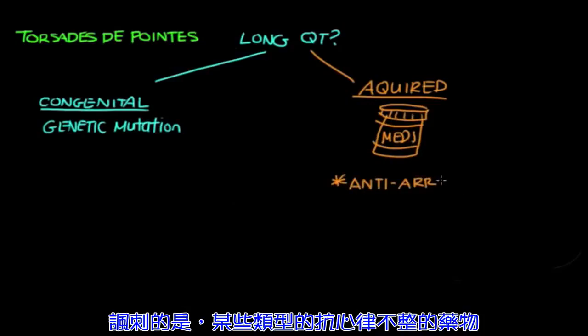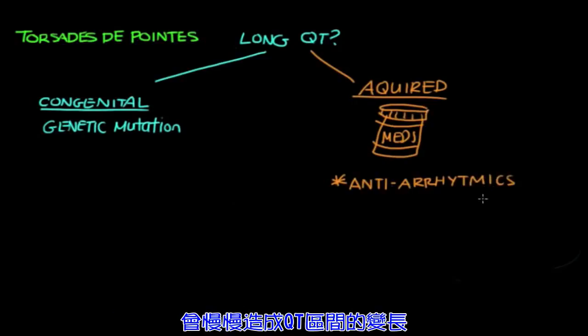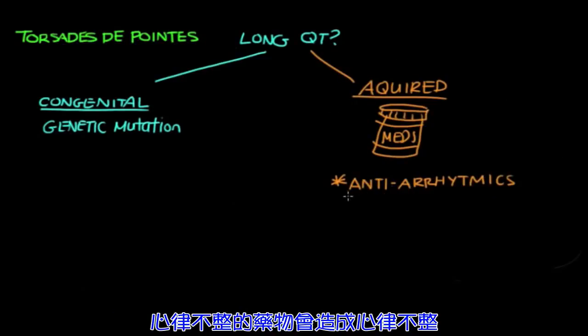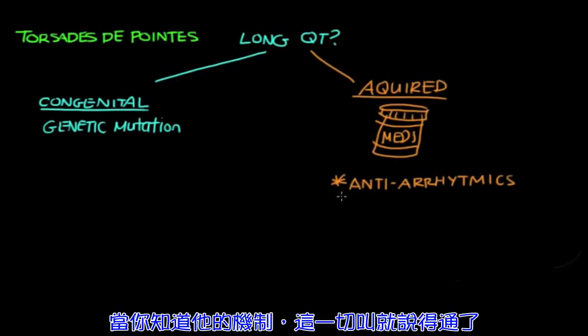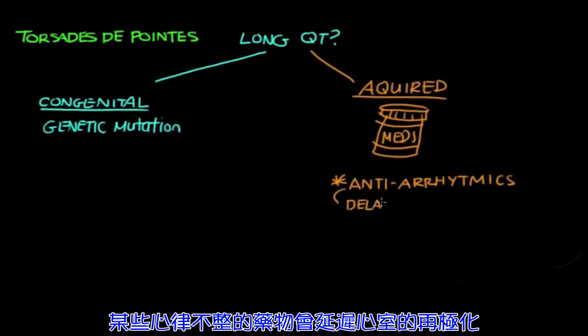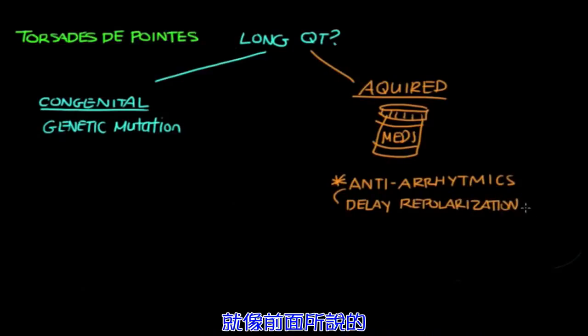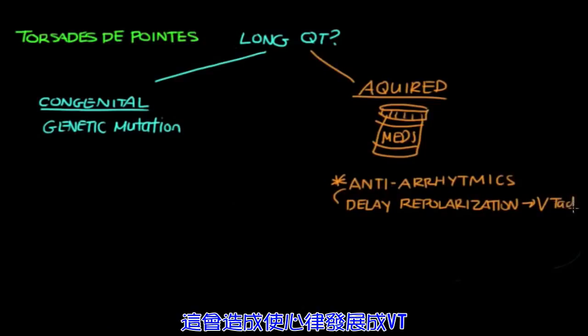And, ironically, certain types of antiarrhythmics will put you at an increased risk of developing long QT. So, that seems kind of funny. The medications we use to prevent arrhythmias can cause them. But, when you think about the mechanism, it makes sense. Certain antiarrhythmics will delay repolarization of ventricular cells. And, like we said earlier, this can set up an environment for a heart to go into V-tach.